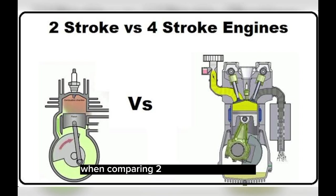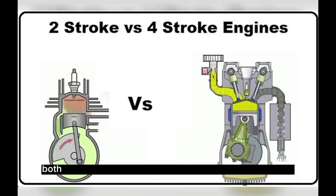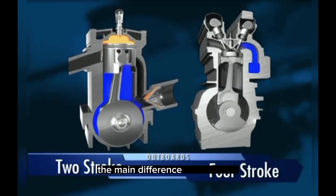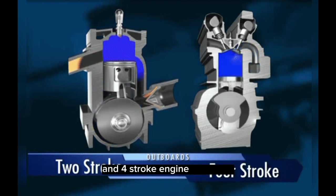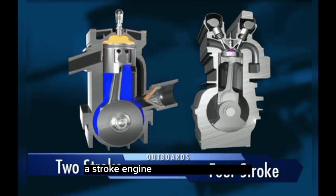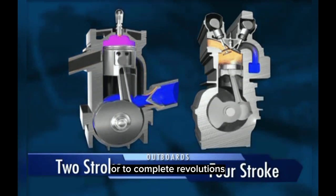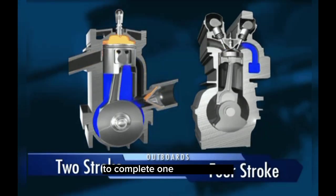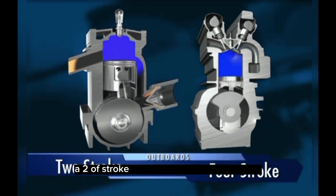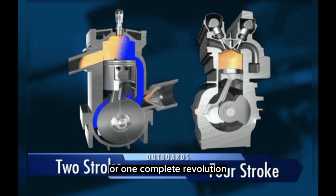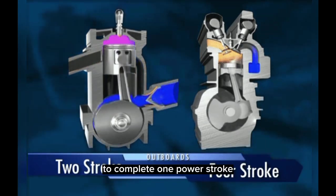When comparing two-stroke and four-stroke engines, their main difference is in how they operate. Both engines use the combustion cycle to produce energy. A four-stroke engine goes through four stages, or two complete revolutions, to complete one power stroke, while a two-stroke engine goes through two stages, or one complete revolution, to complete one power stroke.